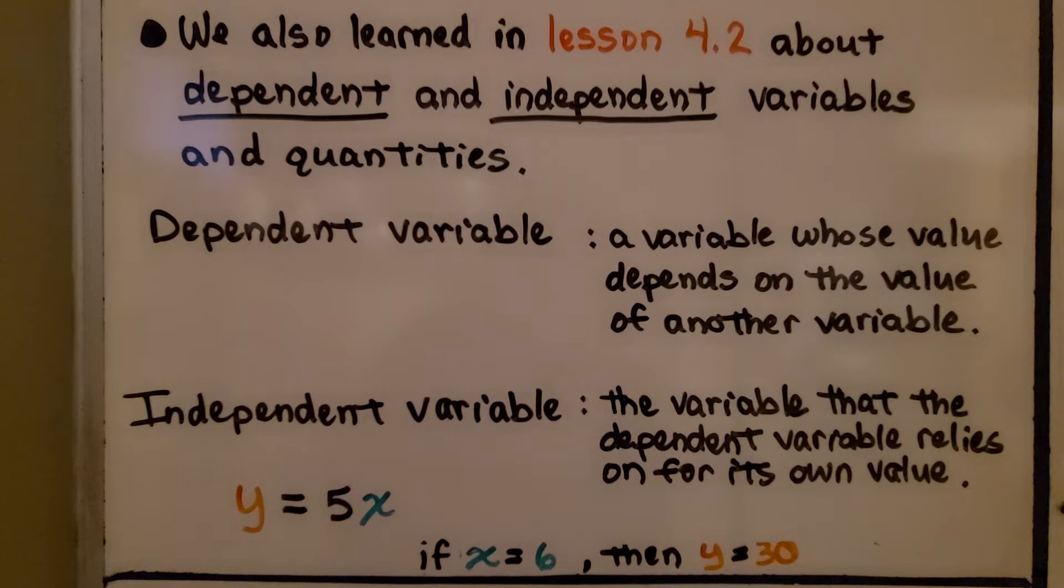We also learned in lesson 4.2 about dependent and independent variables. A dependent variable is a variable whose value depends on the value of another variable. An independent variable is the variable that the dependent variable relies on for its own value.